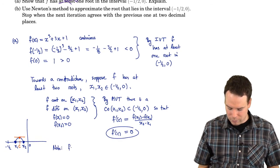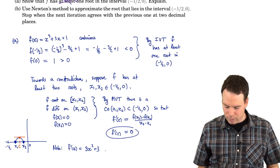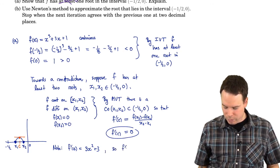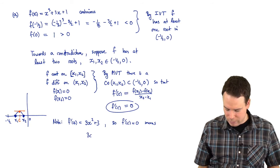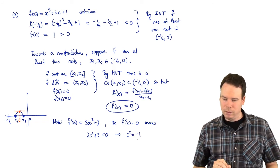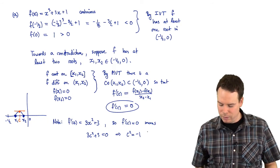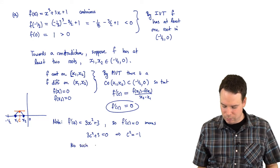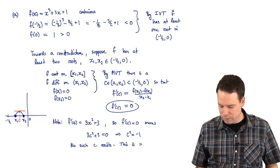But is there actually a place where the derivative is zero? Let's note that the derivative is 3x squared plus 3. So f prime of c equals zero means 3c squared plus 3 equals zero, or in other words c squared equals negative one. So this place where the derivative is zero would have to be at a number c whose square is negative one. But there is no such c — no real number has a square of negative one. This is impossible.